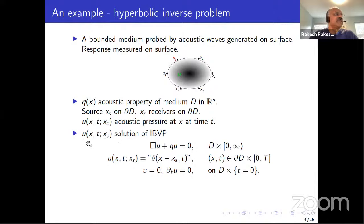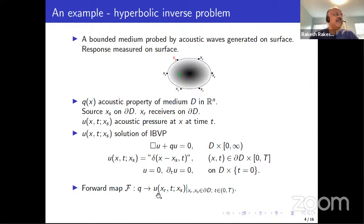You measure the acoustic disturbance U on the receivers. This is your forward map: if you know Q — if you knew what the medium was — and if you thump it, you can predict what you will hear in the geophones. It's a well-posed problem — you can do it numerically. There are delta functions here, but there are ways of extracting the most singular part. So if you know what the medium is, you know what you would hear on the geophones.